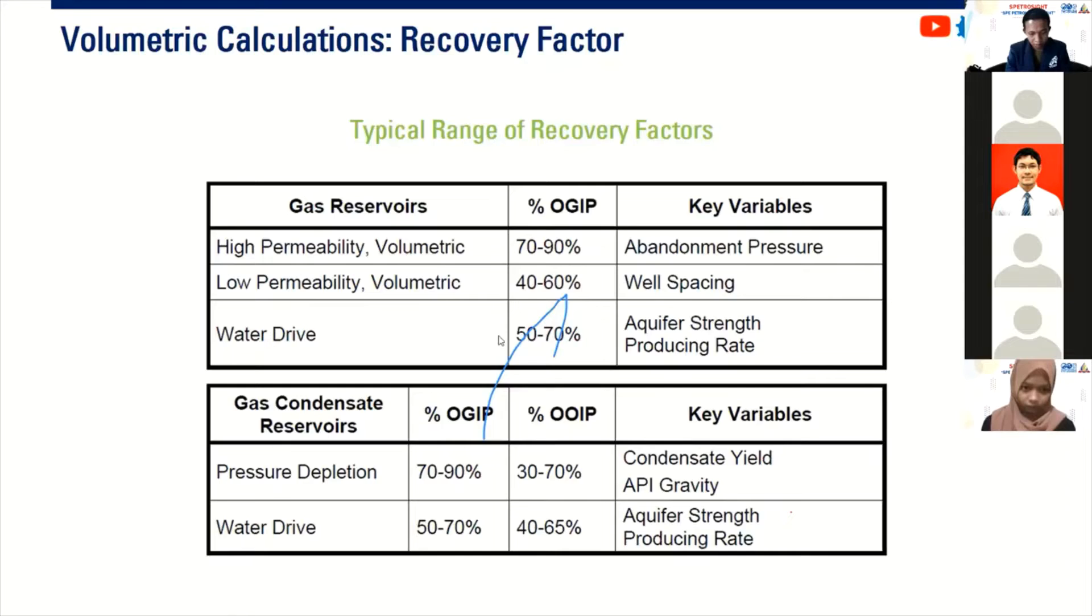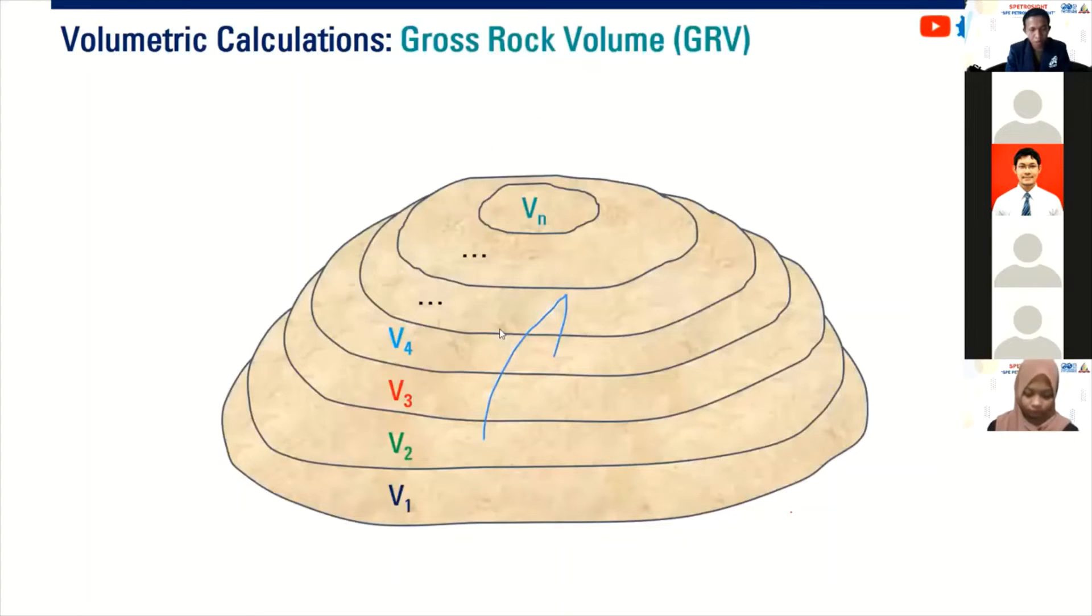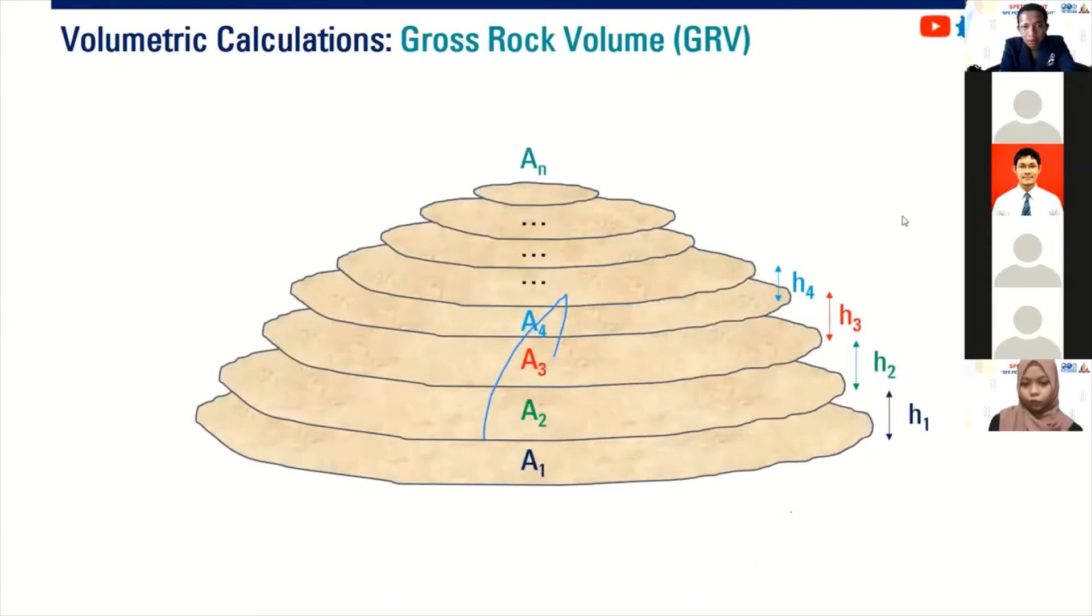We continue. Now we want to know about the gross rock volume because we want to know about the gas in place. So if we start from here, we have this schematic of a reservoir. Let's say it's a gas reservoir and we can divide the reservoir to some segments from segment 1, 2, 3 to N. We can actually break down the segment to be represented by area and thickness, because area times thickness will be the volume.